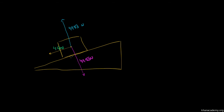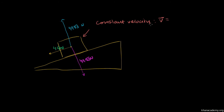Now, instead of assuming the block is stationary, let's assume it's moving with a constant velocity. We're dealing with a scenario where the block has a constant velocity, and for the sake of this video we'll assume that constant velocity is downward along the ramp — let's say 5 meters per second down the wedge, in the direction parallel to the surface of the ramp.